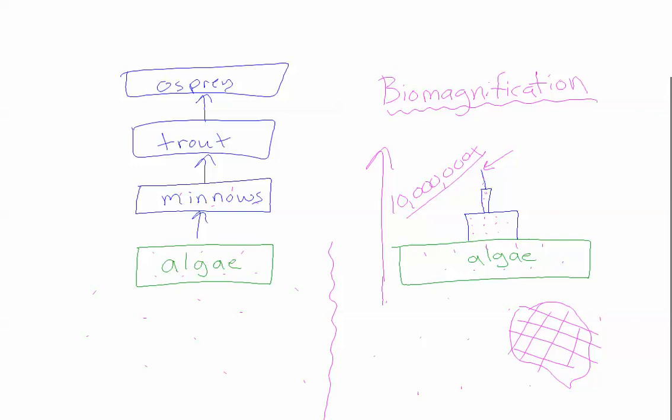Because, remember, that did two things. When we sprayed whole areas with DDT, number one, we select for the resistant mosquitoes, so then ultimately DDT is rendered ineffective as a weapon.